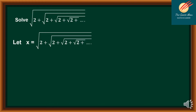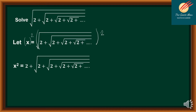Observe that if I square both sides of the equation, it will result to this. So taking the square of both sides, x squared is equal to — take note that I can remove the biggest radical symbol — so I have 2 plus the square root of 2 plus the square root of 2 plus the square root of 2, and so on and so forth. This expression is actually equal to the value of x. So by substitution, I can have x squared is equal to 2 plus x.